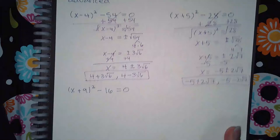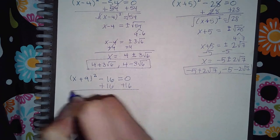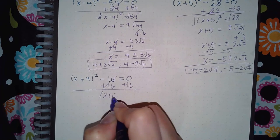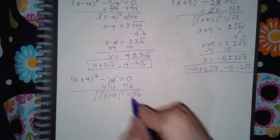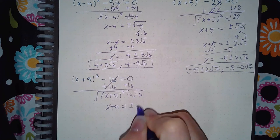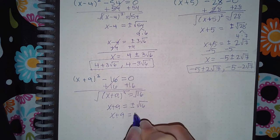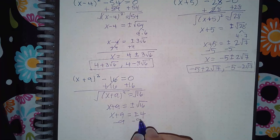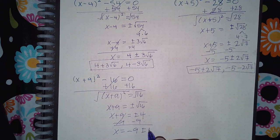And for our last example here, we'll add 16 to both sides. We get (x + 9)² equal to positive 16. Take the square root on both sides, we get x + 9 equals plus or minus the square root of 16. The square root of 16 is actually 4. And if I minus 9, I get x equals -9 ± 4.